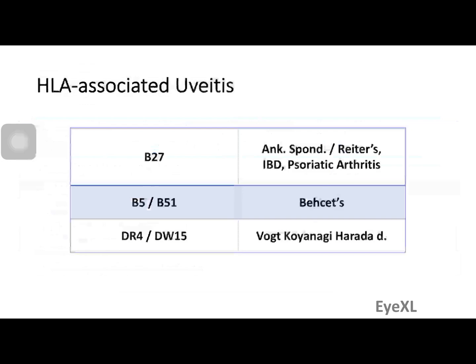If certain HLA types are positive, the patient is more likely to have uveitis and associated conditions. HLA-B27 positive — the most common — is associated with ankylosing spondylitis, Reiter's disease, inflammatory bowel disease-associated uveitis, and psoriatic arthritis. HLA-B5 or B51 is associated with Behçet's disease. HLA-DR4/DW15 is commonly seen with Vogt-Koyanagi-Harada disease.